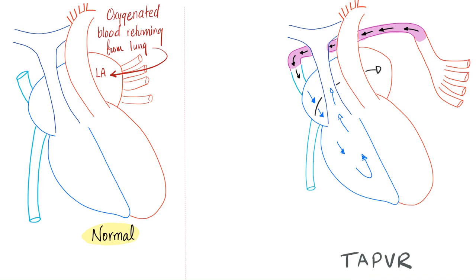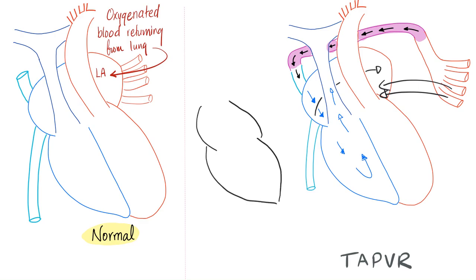In partial anomalous pulmonary venous return, not all four pulmonary veins are affected. Two go normally to the left atrium, but the other two form an aberrant vessel to the right side of the heart. Normally the heart apex points downward, forward, and to the left. But here, the right side receives more blood, adapts and grows, and on x-ray the enlarged right ventricle looks like a snowman — which is the classic TAPVR appearance on chest x-ray.